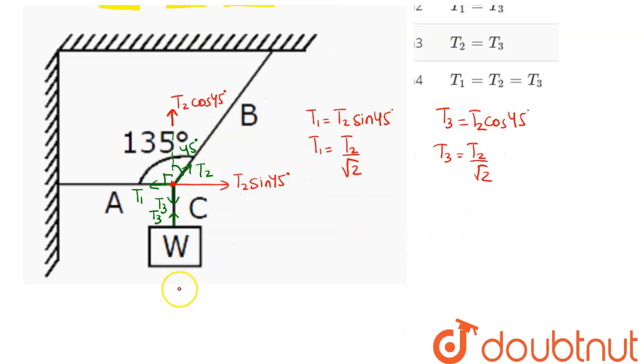And for here, we can say that this T3 balances with W. So, T3 we can say here is equal to W. So, we can say here T3 is equal to W which means here that T2 comes here as root 2 W. Next, we can say here T2 by root 2 is W which means here T1 also comes as W. So, T1 and T3 here are equal but T2 is not equal.